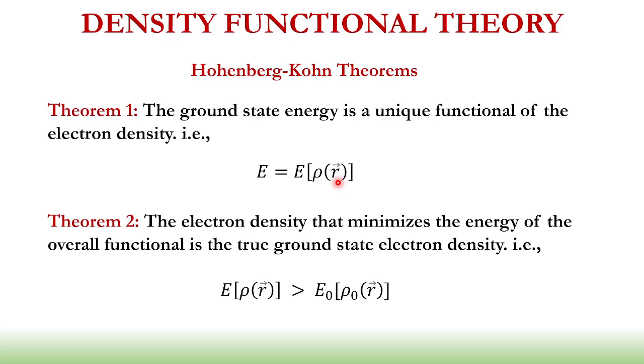To find the ground state energy, theorem number two has been considered. It says that the electron density that minimizes the energy of the overall functional is the true ground state electron density. And if we're going to derive or expand or extend this one mathematically, we really can find that this is following our variational principle.